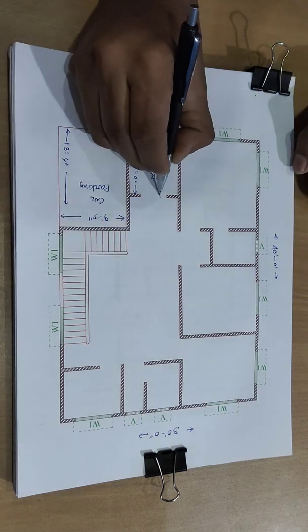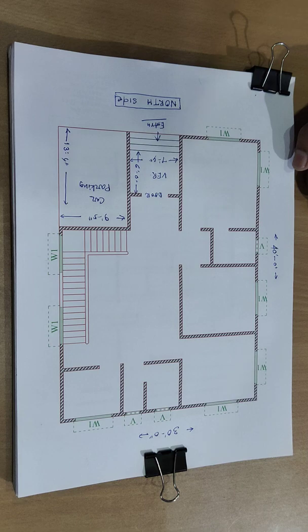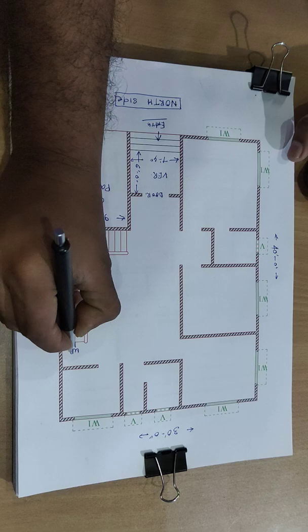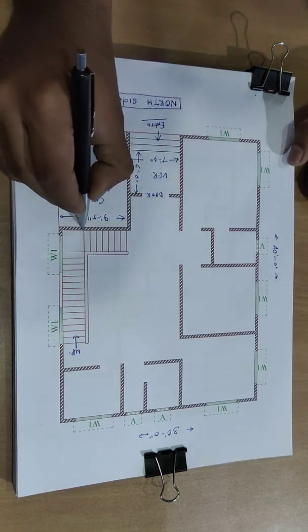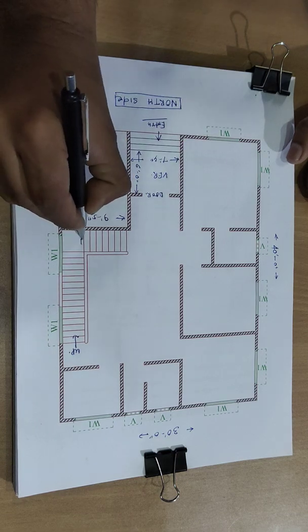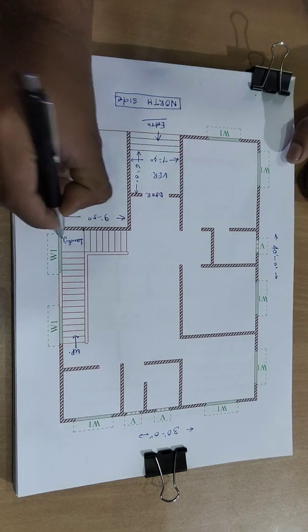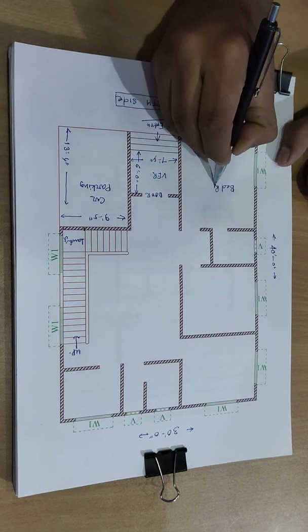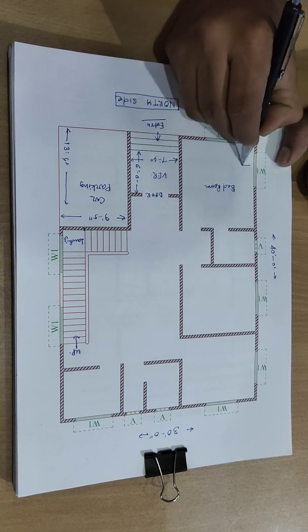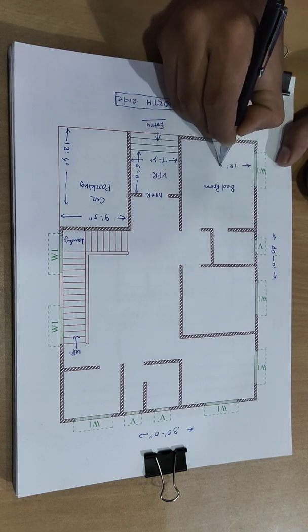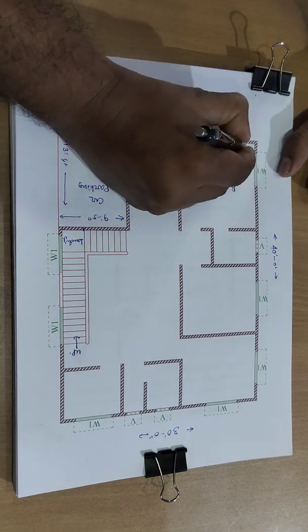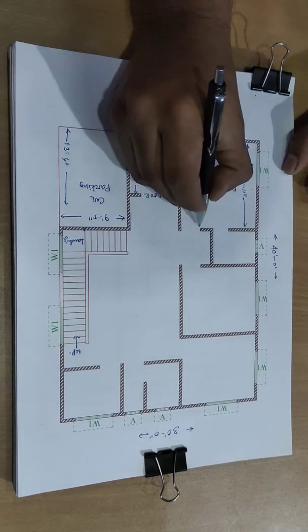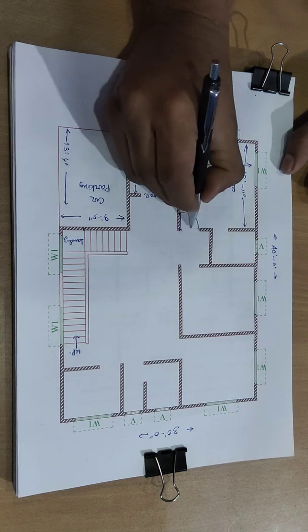Main entry door, stair up, the landing, this type. And bedroom, first bedroom. Size, this direction 12 feet and this direction 12 feet 11 inch. And door, this is door.